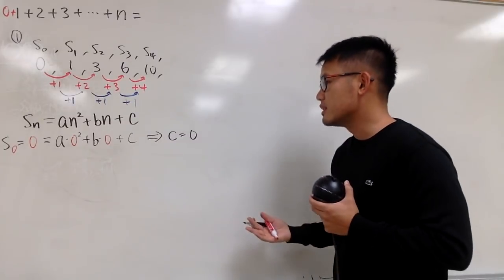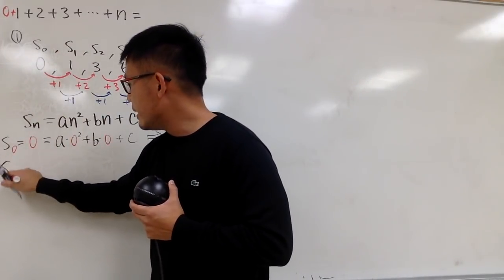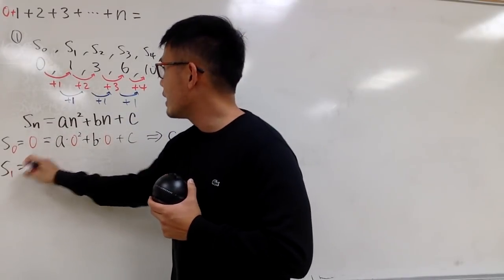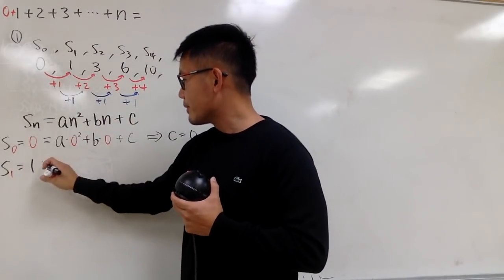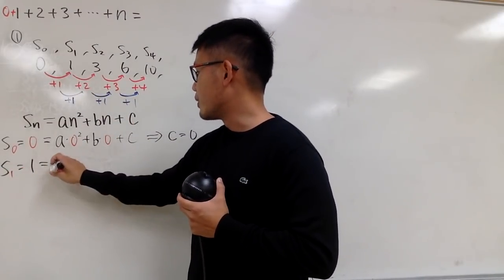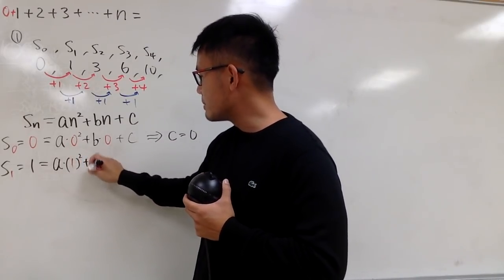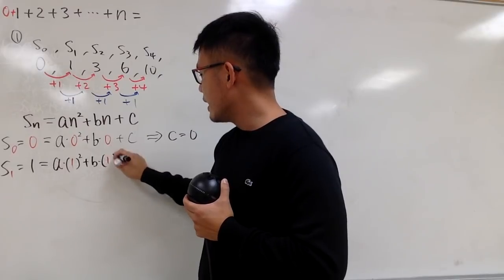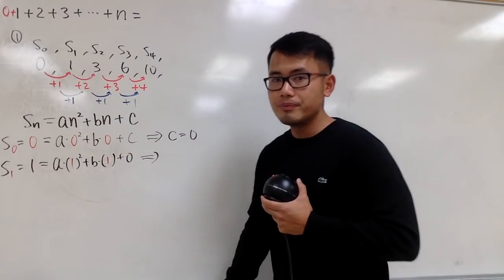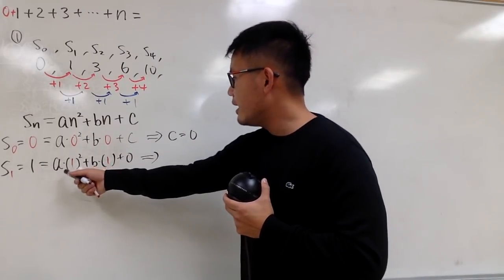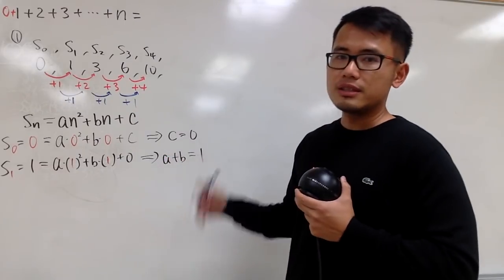Next, S1: this means n equals 1, and the partial sum equals 1. So a times 1 squared plus b times 1 — and since c is 0 already — gives a plus b equals 1.